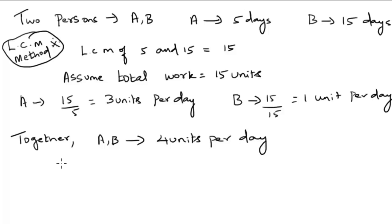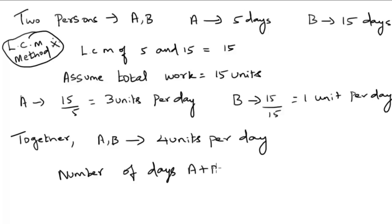If the question is to calculate how many days will A and B together need to complete the work, we can easily find the answer. The number of days A and B will need is equal to 15 units divided by 4 units, which equals 3.75 days.